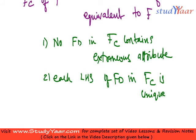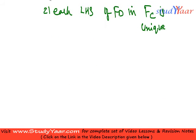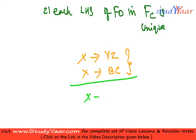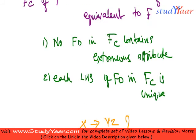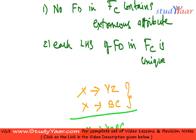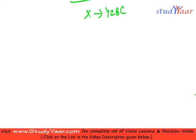What do we mean by the second condition? We mean that I should not have X → YZ and X → BC as separate FDs in my canonical cover. Rather, I should combine them and have X → YZBC — I should take a union. So this is the definition of a canonical cover.